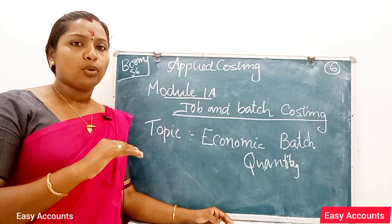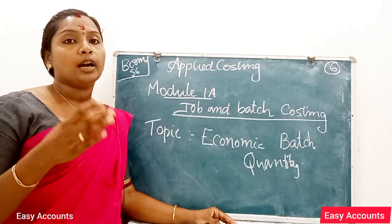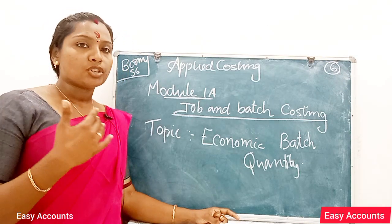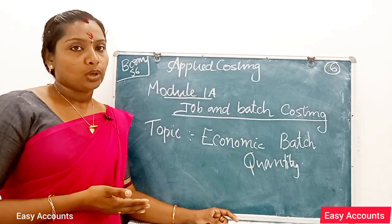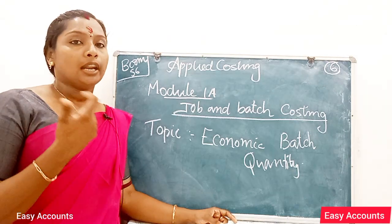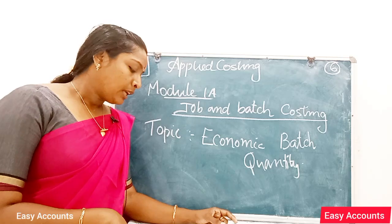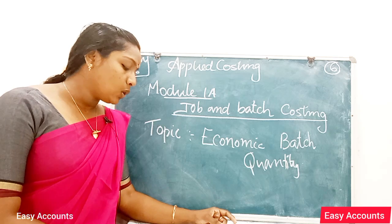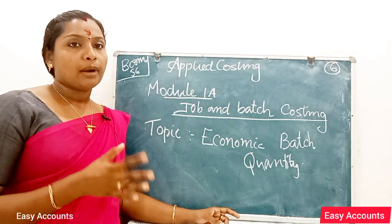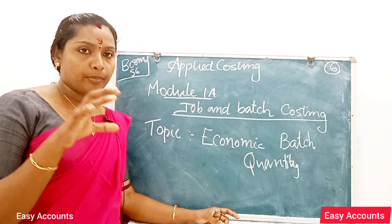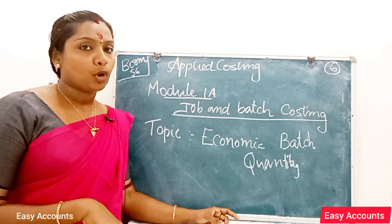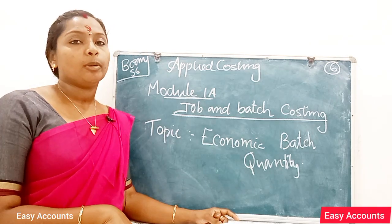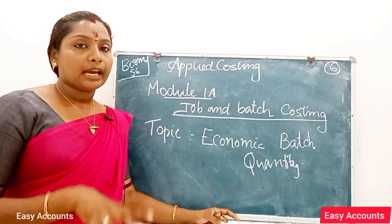The number of units to produce in one batch depends on several factors. We need to consider: annual demand, setting up cost per batch, and carrying cost per unit per year. We will consider those three factors to calculate the economic batch quantity.